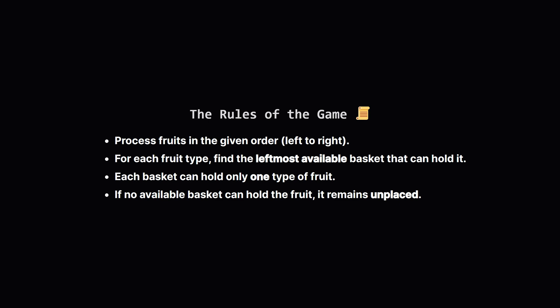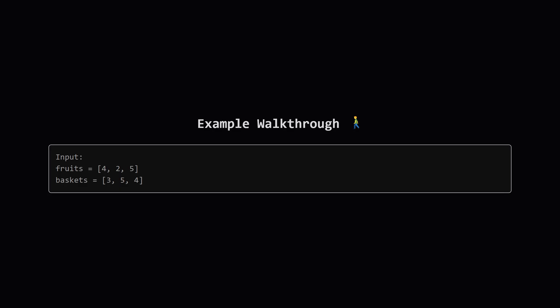Once we put a fruit type in a basket, that basket is considered used and can't hold anything else. If we look through all the available baskets and none of them are large enough for our current fruit, that fruit type is left behind. Let's walk through an example. Imagine we have fruits with quantities 4, 2, and 5, and baskets with capacities 3, 5, and 4. We want to find out how many fruit types will be left over.